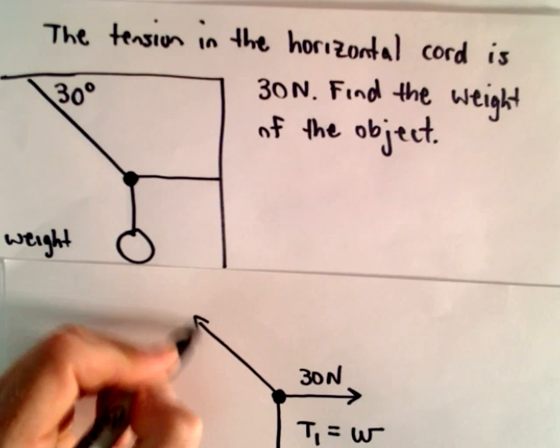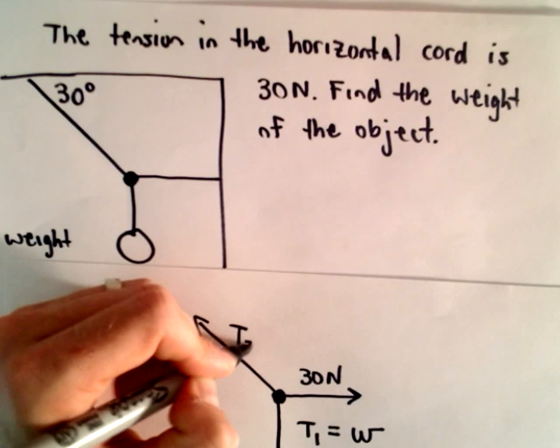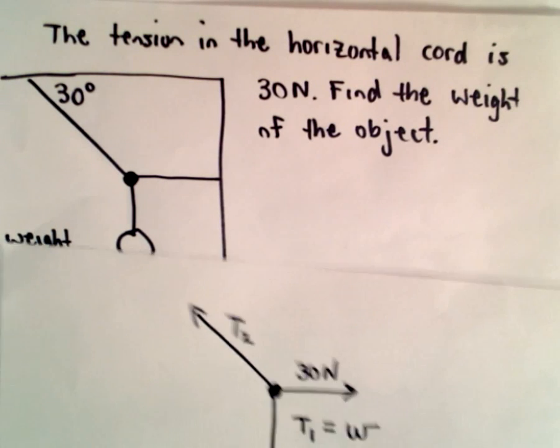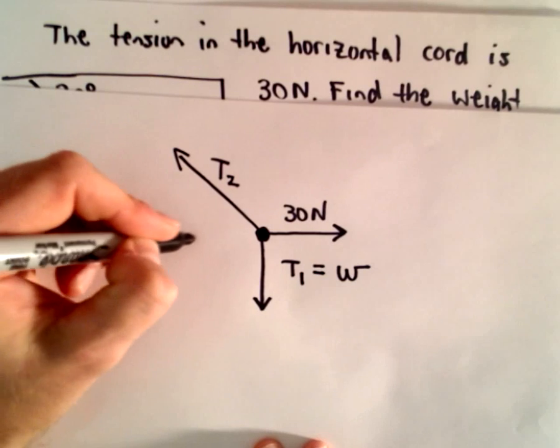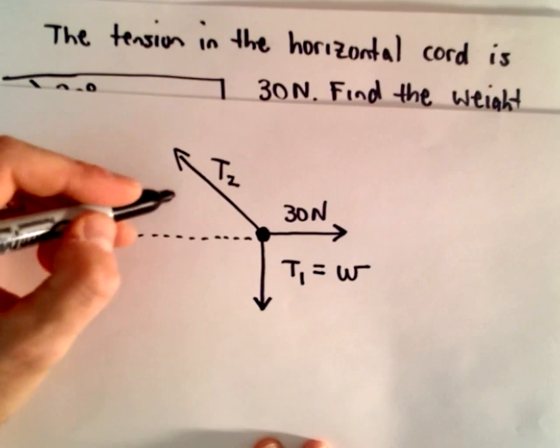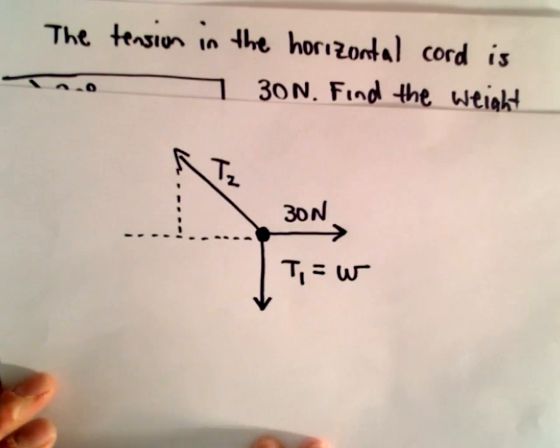Now, we also have this other cord. I don't know its tension, let me maybe just label that as T2. What I'm going to do is I'm going to break down this left side into its horizontal and its vertical components.